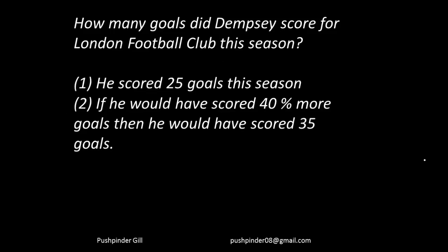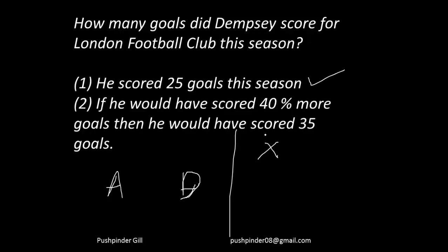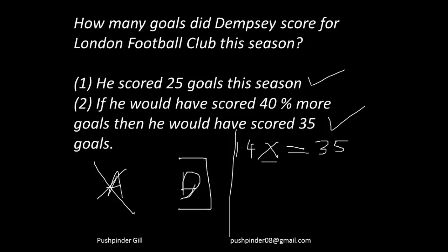Next question: how many goals did Dempsey score for London Football Club this season? Statement 1 says he scored 25 goals — that gives the answer. So my answer is A or D. Statement 2 says if he had scored 40% more goals, that is 1.4x, he would have scored 35 goals. So 1.4x equals 35, which gives me x. Statement 2 is also sufficient. Both statements individually give the answer, so my answer is D.